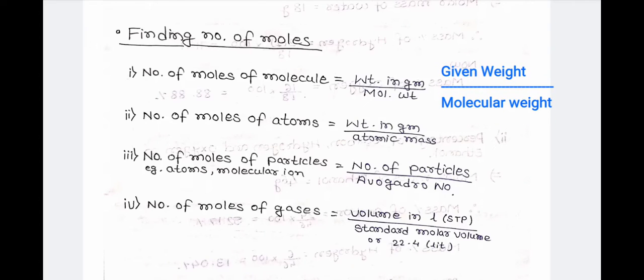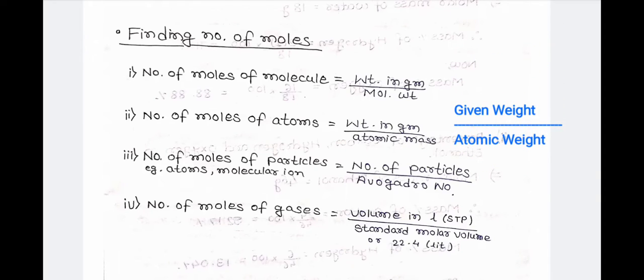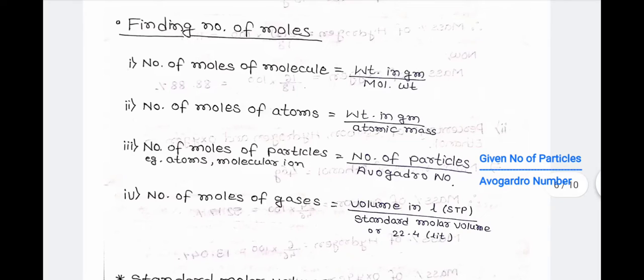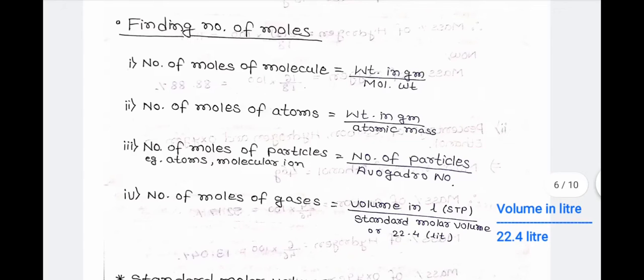Now, finding the number of moles — there are 4 formulas. Formula 1: number of moles of molecules = weight in grams ÷ molecular weight. Formula 2: number of moles of atoms = weight in grams ÷ atomic mass. Formula 3: number of moles of particles (atom, molecule, or ion) = number of particles ÷ Avogadro number. Formula 4: number of moles of gases = volume in litres ÷ standard molar volume (22.4 litres).